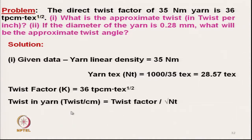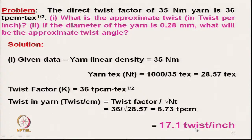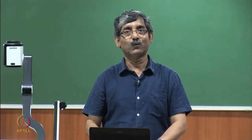The equation is: twist per centimeter = twist factor / √tex. So twist per centimeter = 36 / √28.57 = 6.73 TPCM. Multiplying by 2.54 gives the twist per inch. The answer to part 1: the yarn has a twist of approximately 17.1 twist per inch.